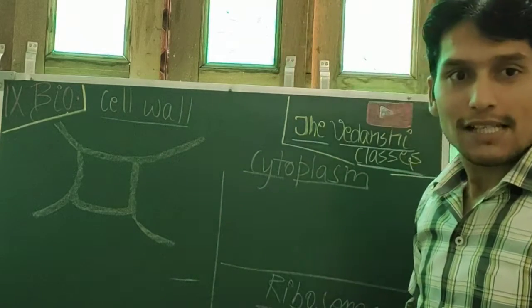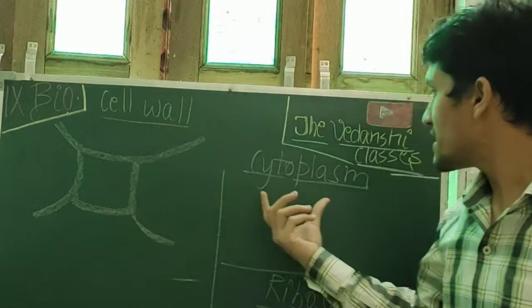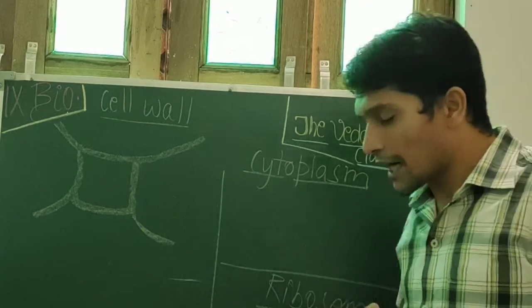Today we will discuss three cell organelles: cell wall, cytoplasm, and ribosomes.